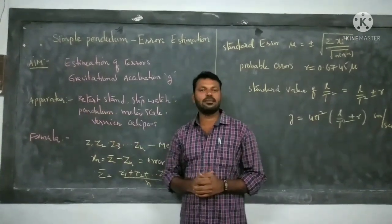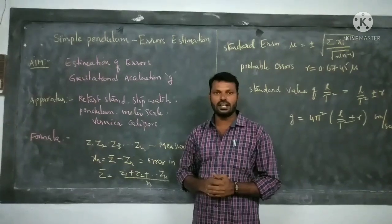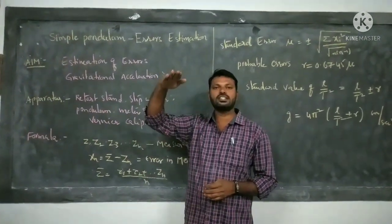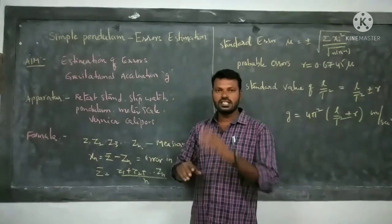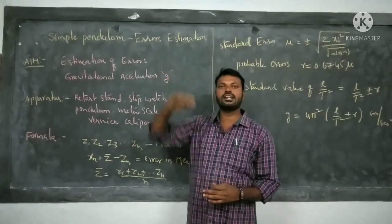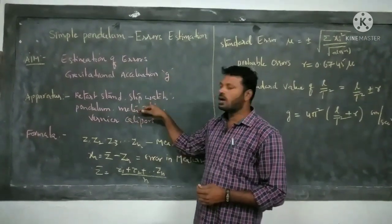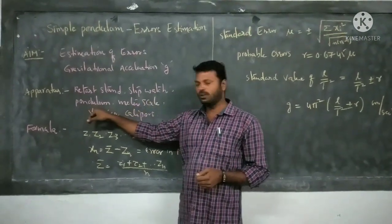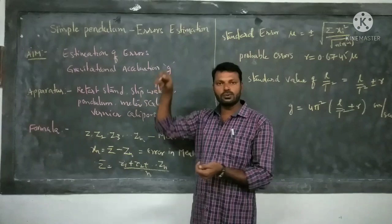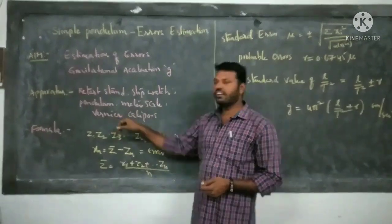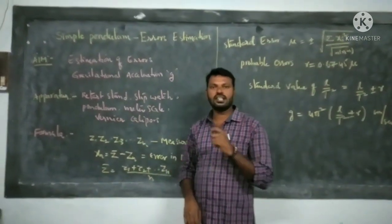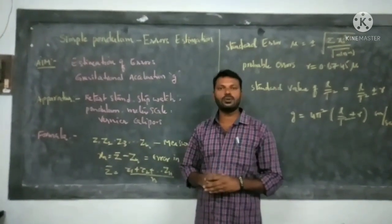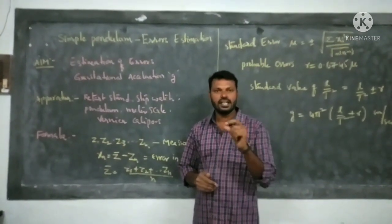Next, the apparatus: a retort stand to suspend the Simple Pendulum, a stopwatch to calculate the time period of the Simple Pendulum, a meter scale to measure the length, and vernier calipers to measure the radius. Now let us see how to estimate the errors.